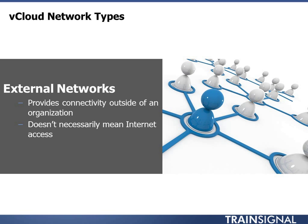I note that external access doesn't necessarily mean Internet access. It could go to the Internet, but it could also just get to your corporate LAN, which then gets you to the Internet. By external, all we're really saying is that this is the network that gets you out of the cloud and to wherever it needs to go after that. You pretty much have to define an external network because, if you just have a network that can only talk to itself, it becomes kind of pointless.